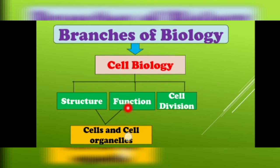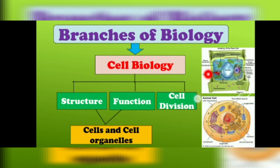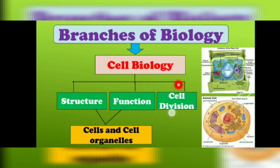For example, cells are composed of different types of organelles such as lysosomes, mitochondria, and Golgi apparatus. When you study about plant cells and animal cells, it will be included in cell biology. Cell biology also deals with cell division — meaning how new cells are formed and how they arise from pre-existing cells. All things related to the cell are studied in cell biology.